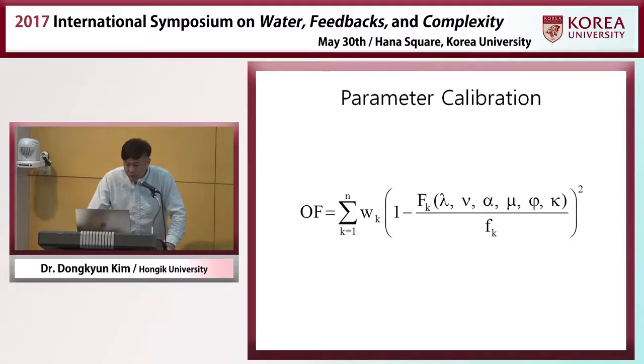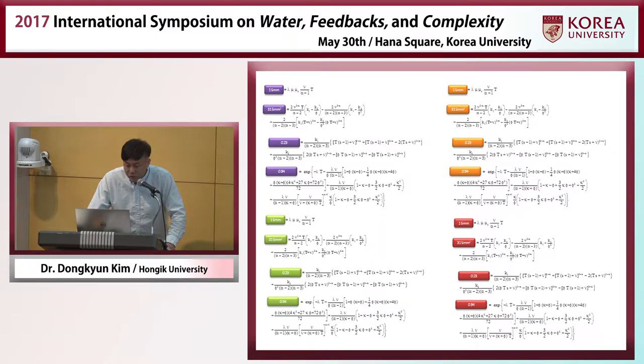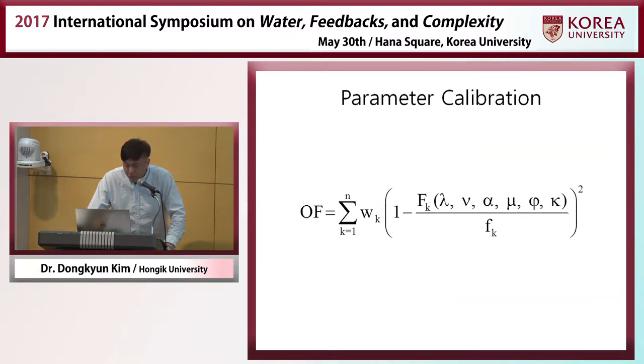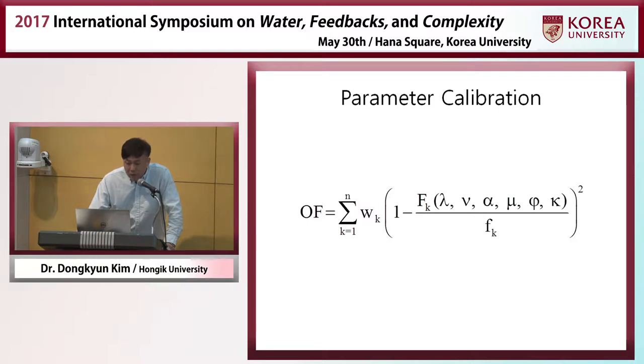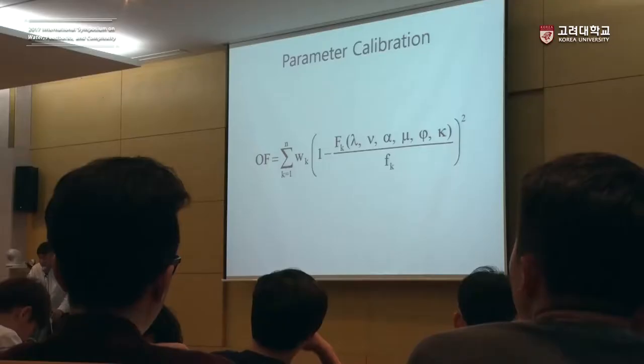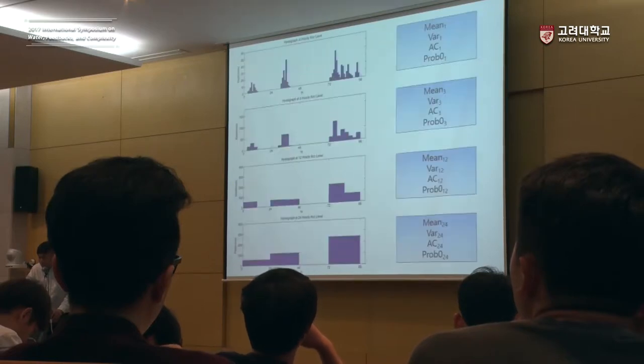In the objective function, the large Fk on the right-hand side is expressed in terms of the six parameters, and the small fk represents the observed rainfall statistics. If the observed rainfall statistics and the synthetically generated rainfall statistics are similar, this ratio term will be close to one, and one minus this will be close to zero. So if we can find the six parameters that minimize this objective function, we find the parameter set that minimizes the difference between observed and synthetically generated rainfall. This is a complicated problem because the equation is quite nonlinear and hard to solve by hand.